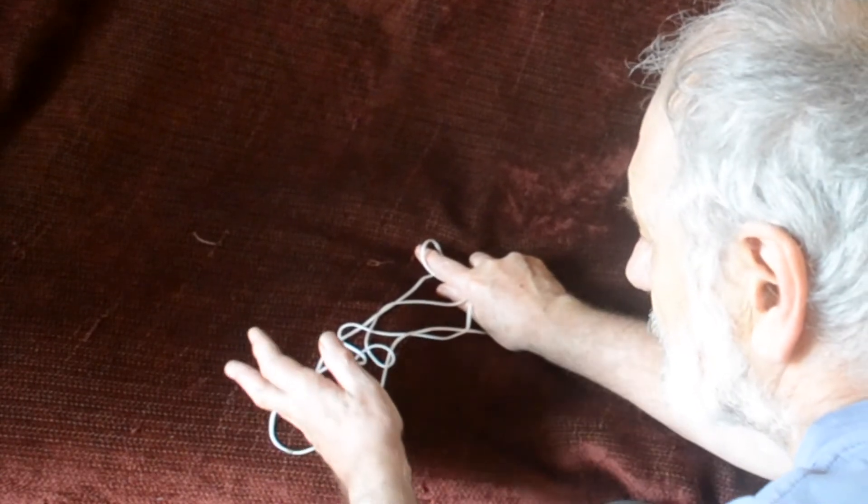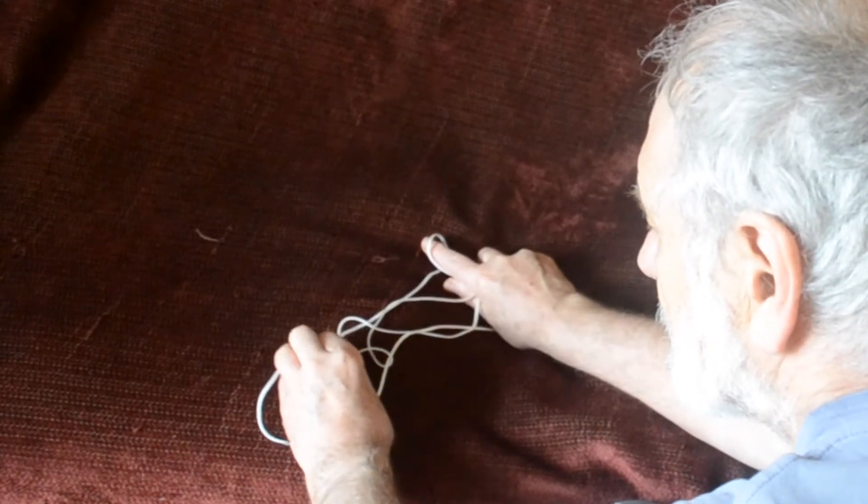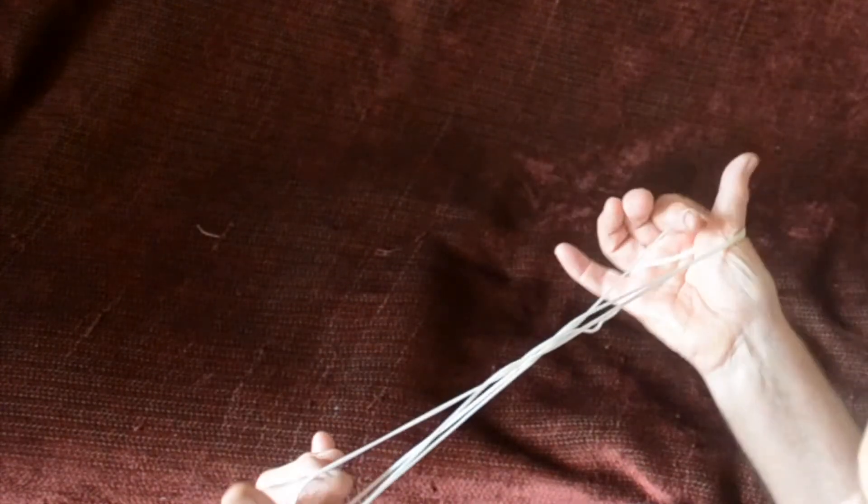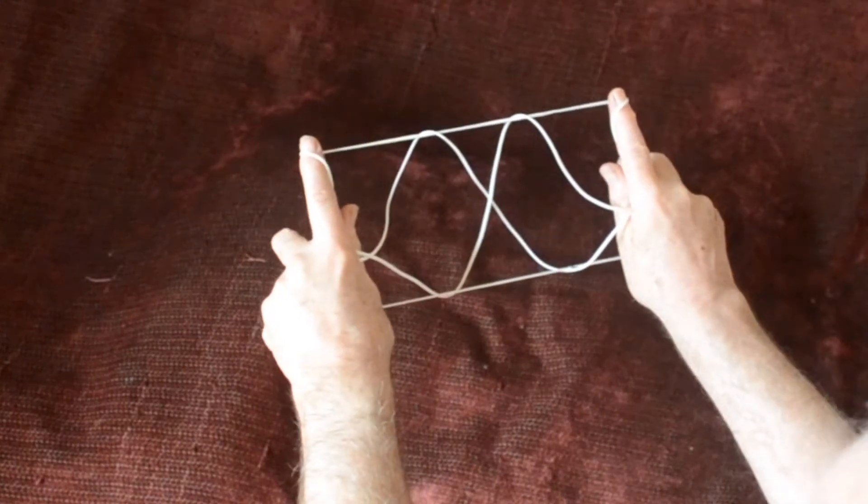Okay. So little finger under the one string and the link gets taken up by the thumb. Pull tight. Again, Caroline extension. Turn hands away and should have two diamonds.